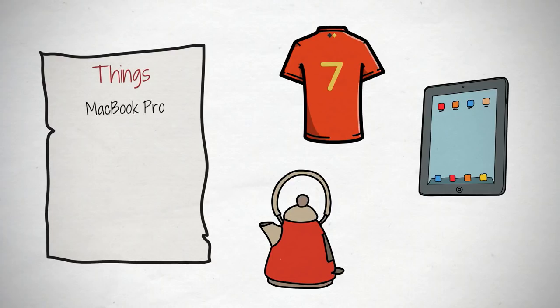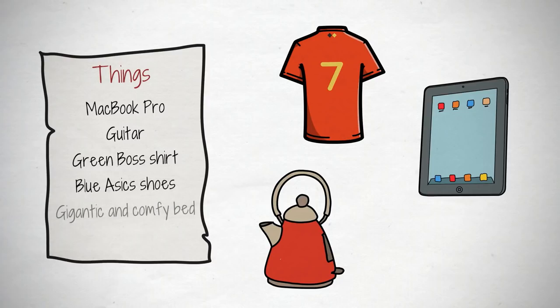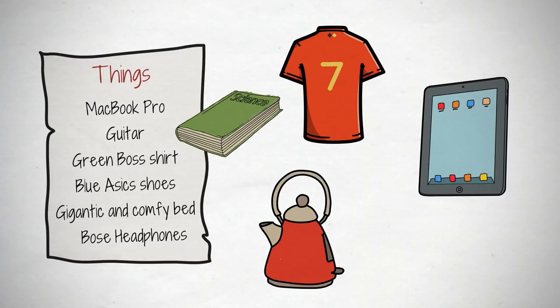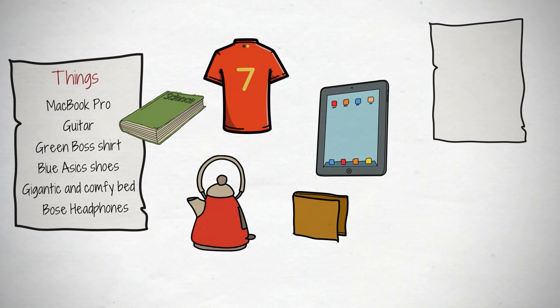Here's a snippet of mine as an example. MacBook Pro, Guitar, Green Boss shirt, Blue A6 shoes, Gigantic and comfy bed, Bose headphones. I have more items on the list. For you, this could mean that book you love, or the awesome leggings that are super comfortable, or your wallet.